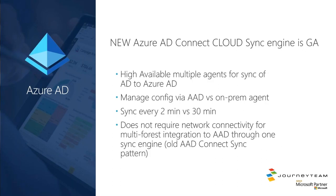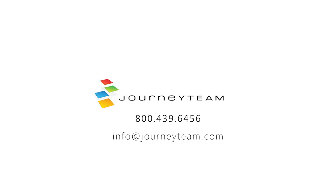Sync is every two minutes versus every 30 minutes with the old engine. And if you're going through mergers and acquisitions with a new company that has a separate domain in a forest and you want to connect their identities into your Microsoft tenant, the old way required network connectivity between your sync engine and their forest. Now you can just drop one of these little agents in their domain and it'll sync straight up to your cloud. Multiple different forests syncing to a single cloud tenant with no on-prem connectivity between forests is one of its really big selling points. I deployed that for a client two weeks ago and it's been working great.